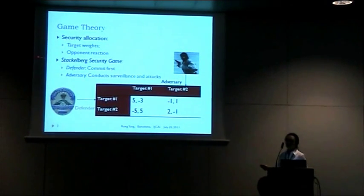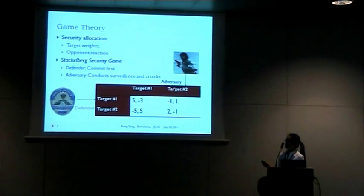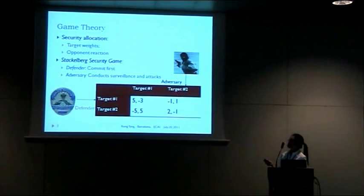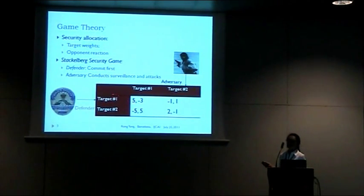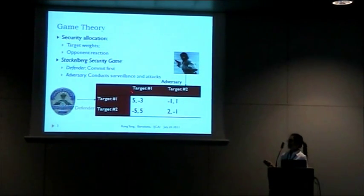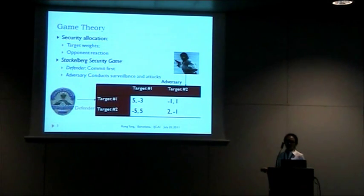Here is a simple example of a security game, where we have the defender as the row player and the adversary as the column player. The outcome of the game depends on which target is protected by the defender as well as which target is attacked by the adversary. Different targets may carry different weights and different importance to the defender, and the adversary may have different preferences for different targets. The game is not necessarily a zero-sum game.